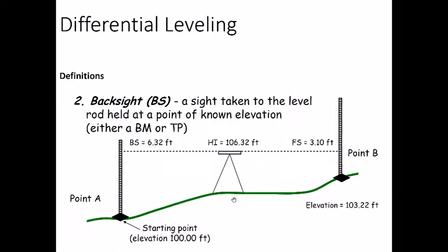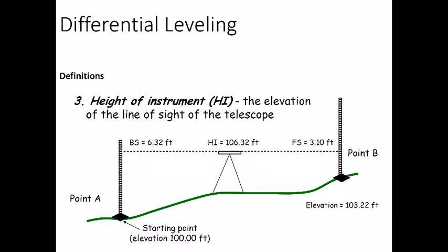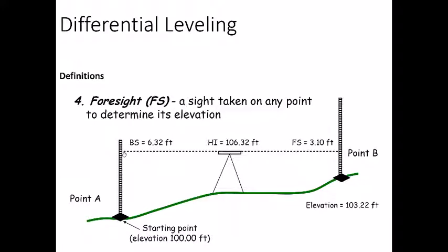A quick review of definitions: a benchmark is a point whose reduced level is known. Whenever you place the instrument, the first reading taken — usually at a point whose reduced level is known — is called the backside. When you add the backside to the benchmark value, that gives you the height of the instrument, which is the reduced level of the imaginary line of sight. The foresight is the last reading taken in any setting of the instrument — in this case, we took two readings: one backside and one foresight.